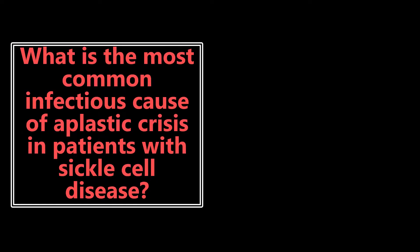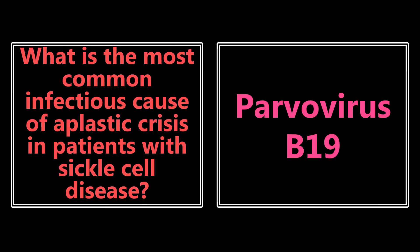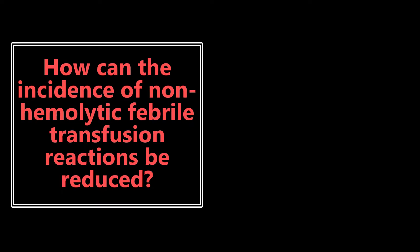What is the most common infectious cause of aplastic crisis in patients with sickle cell disease? This is parvovirus B19. Remember the two really important things to know with parvovirus: it causes erythema infectiosum, that slap cheek disease in children, but it can also cause aplastic crisis in sickle cell disease patients. Really important to know those two different facts.